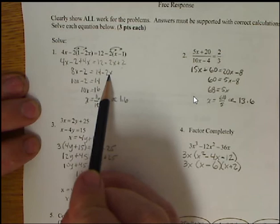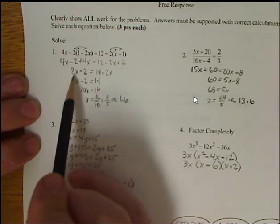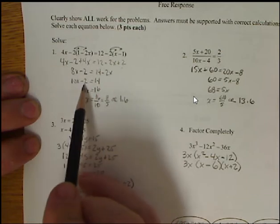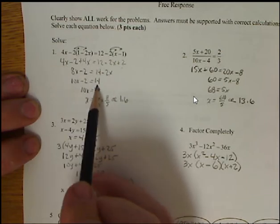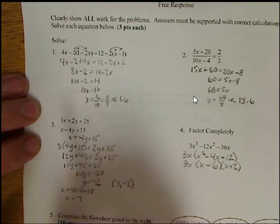12 plus 2 is 14, minus 2x. I want to move all my x's to one side, so I added 2x to both sides, gave me 10x. Minus 2 equals 14, added 2, and then divided by 10.